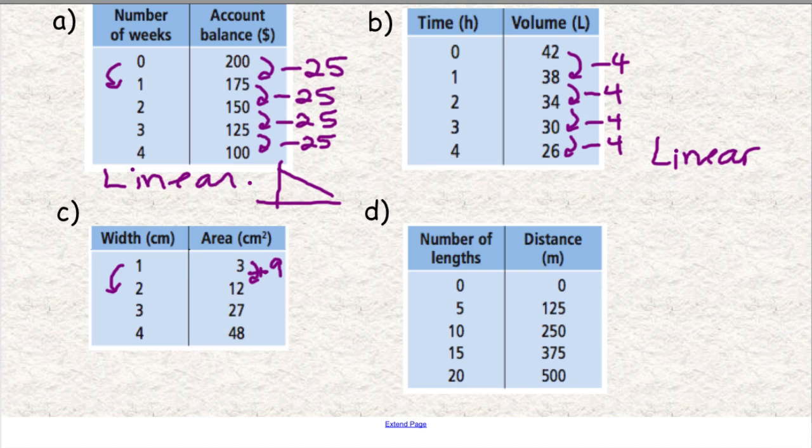And then from 12 up to 27, that's a jump of 15. It's going up 15. And then from 27 up to 48, that's jumping up again 21. They all jump. And there is a bit of a pattern there, but it's not 9, 9, 9 all the way down. It's 9, 15, 21. That graph would be nonlinear.